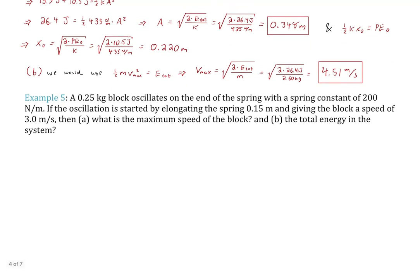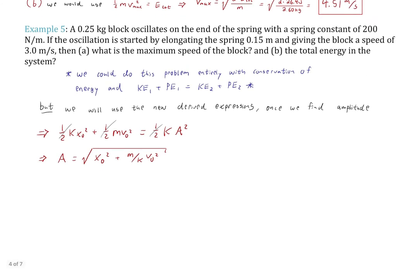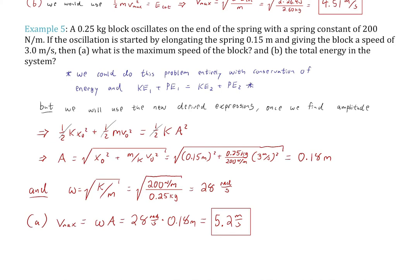Example 5: A 2.5 kg block oscillates on a spring (k = 200 N/m). The oscillator is started by elongating the spring 15 cm and giving the block an initial speed of 3 m/s. Find the maximum speed and total energy. Using conservation of energy to find amplitude: A = 0.18 m. Then find ω = √(k/m) = √(200/2.5). Maximum velocity is V_max = ωA, giving V_max = 5.2 m/s. This is a quick approach: find ω from k and m, then maximum velocity is simply ωA.